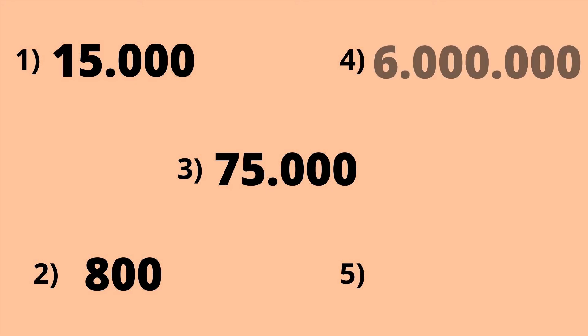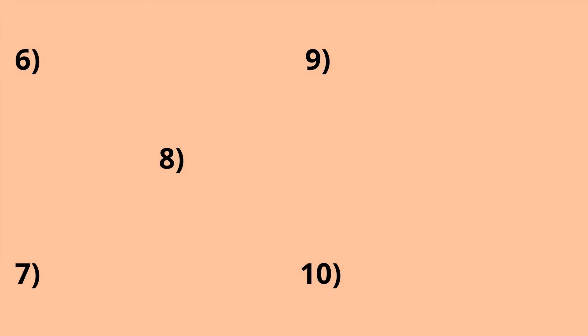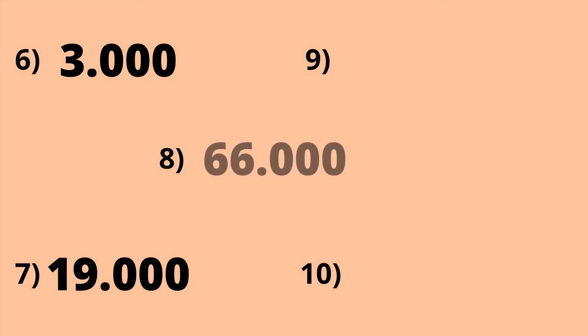Seventy-five thousand. Six million. Six hundred thousand. Three thousand. Nineteen thousand. Sixty-six thousand. You should write it like this.